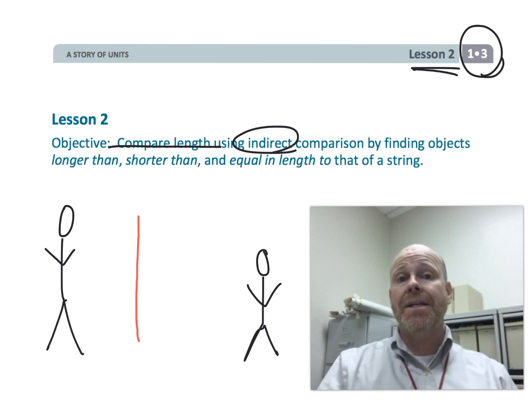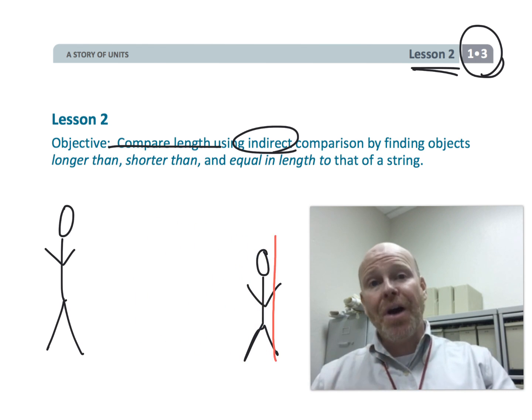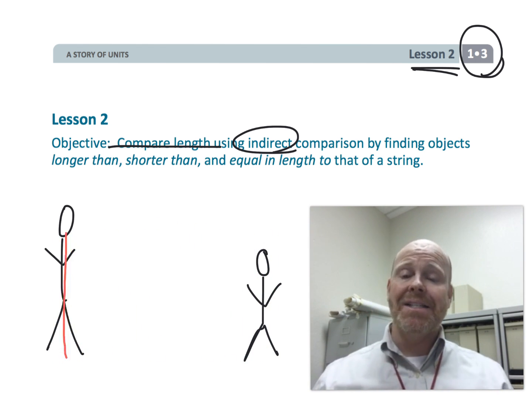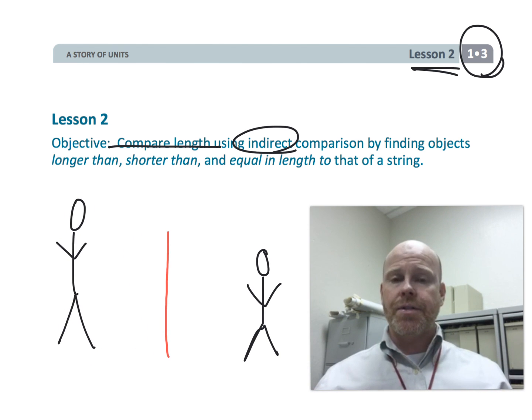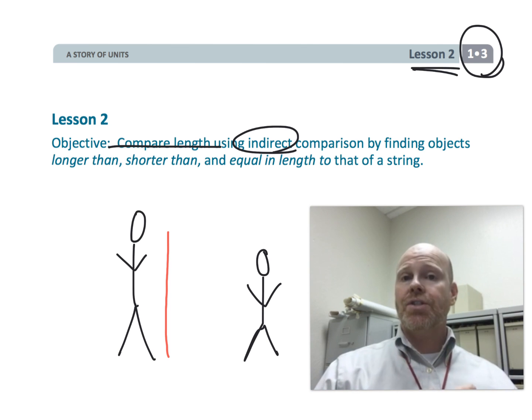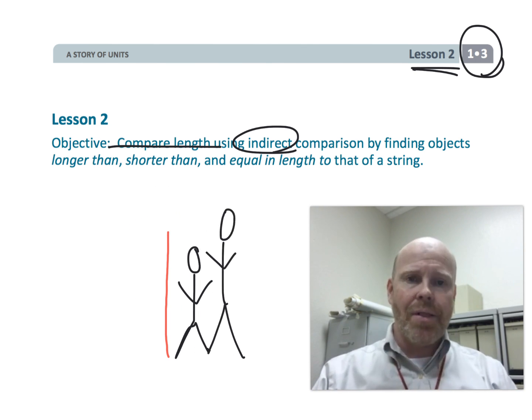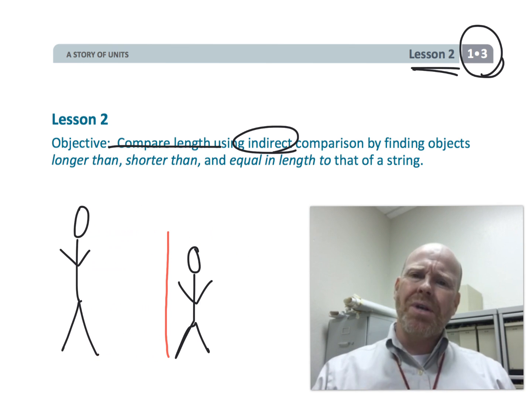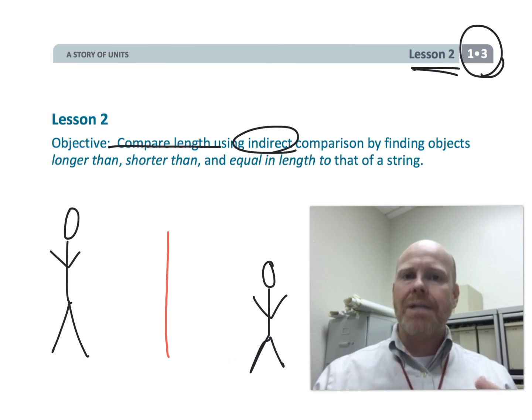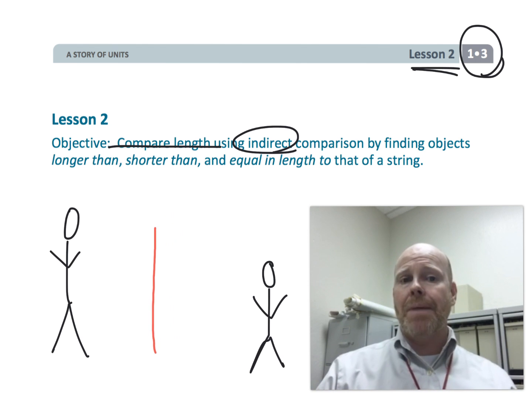So the idea is since the tall person on the left is longer than the string and the short person on the right is shorter than the string, we can now make comparisons between those two people even though we didn't line up those two people next to each other. We're using that string as our indirect measurement tool and that's what this whole lesson is all about.